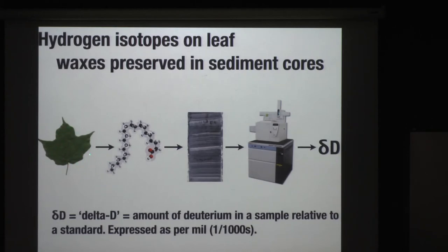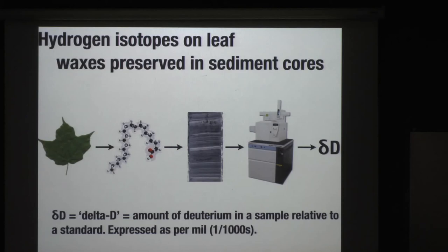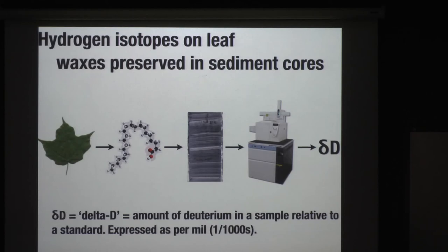Leaf waxes get ablated from the leaves by wind and water, and also when the leaf dies and decays. You end up with these waxes in the soil, and eventually they make their way to a lake or the ocean — either on dust or through rivers — and they're deposited in a core. We can go in and sample the core, isolate these compounds through column chromatography, and then analyze each compound using a gas chromatograph coupled to isotope ratio mass spec — a setup like the one right down the hall here. This technology was invented in the late 1980s at Woods Hole, and it has really opened up a new analytical window for those of us interested in climate and environment, because now rather than measuring bulk isotopes, we can say: I'm measuring a terrestrial lipid, or I'm measuring an aquatic lipid.